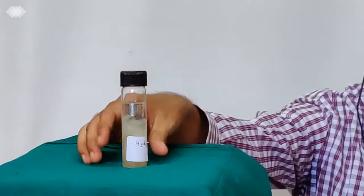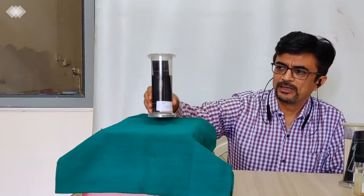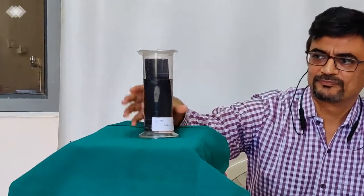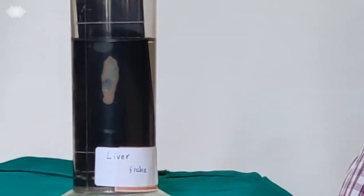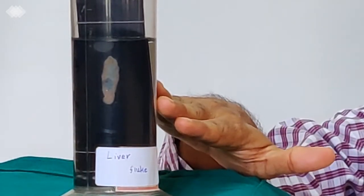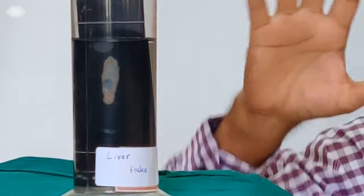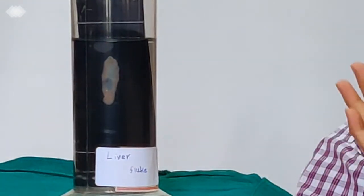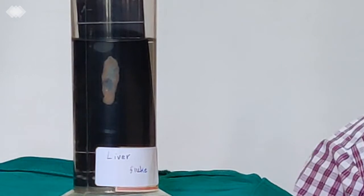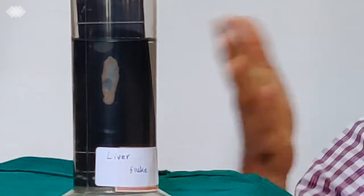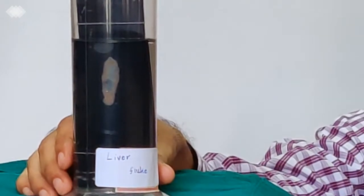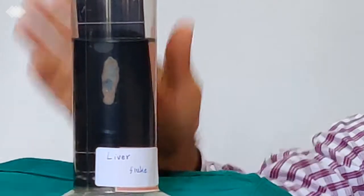The second, which is known as trematodes or which are also known as flukes. You can see the size and it is leaf-like. Its name is trematodes means it has a hole inside the body with which it would attach to its host. So this is liver fluke, so it is an example of trematodes.